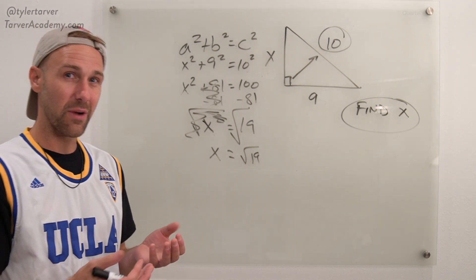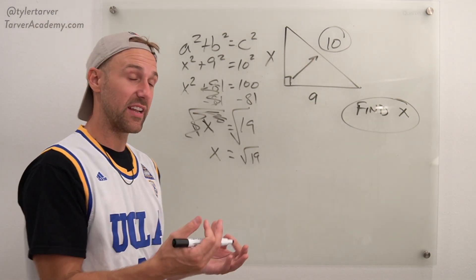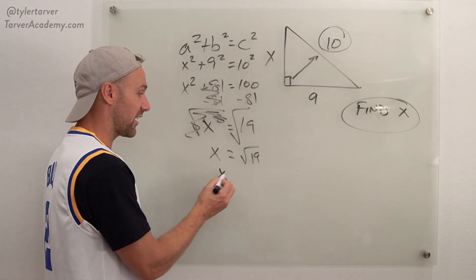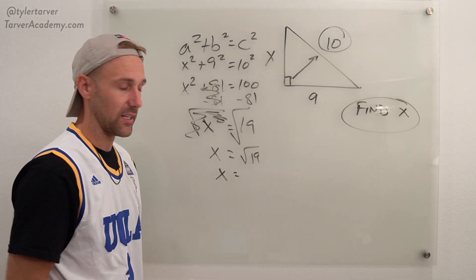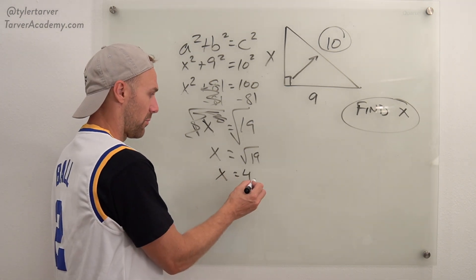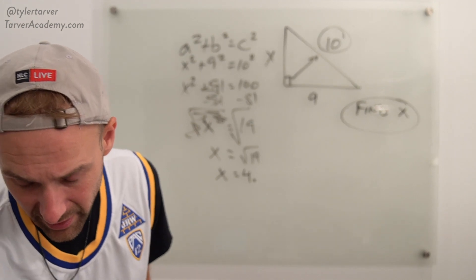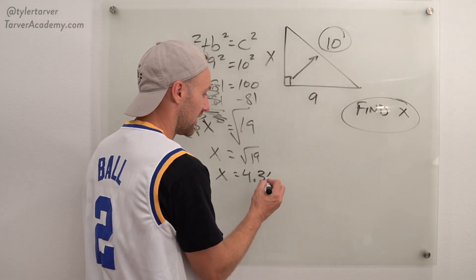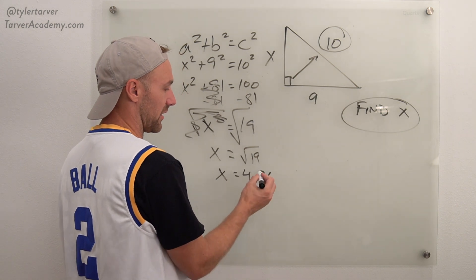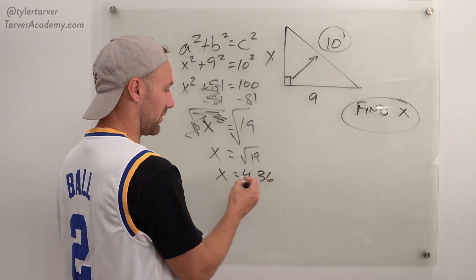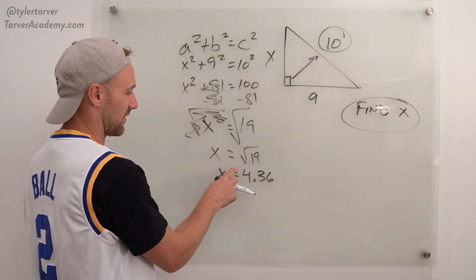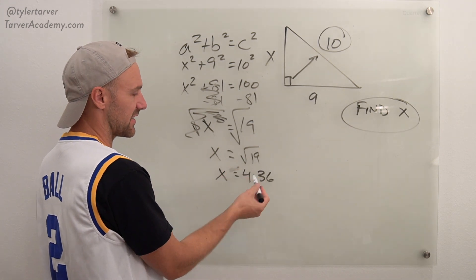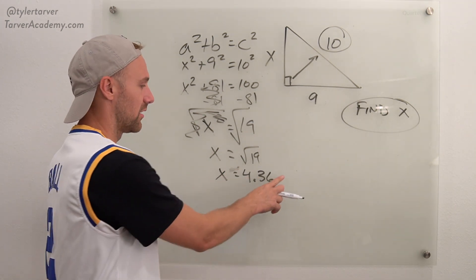Now some of them might want you to actually do like a number with a decimal. And so if you put that in your calculator, square root of 19, you're going to get probably like 4 point, I think I put it in my calculator earlier, 3, 6, and then something's happening. So it'd be like similar to that. It's that and then it goes on for a while.